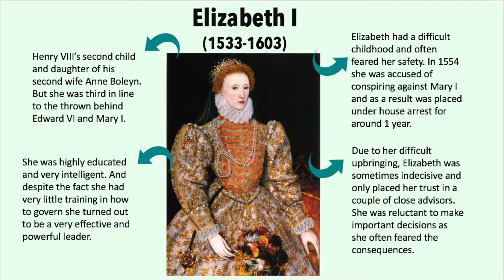But who was Elizabeth and what was she really like? Well, she was Henry VIII's second child and daughter of his second wife, Anne Boleyn. She was third in line to the throne, behind Edward VI and Mary I. Elizabeth had a difficult childhood and often feared for her safety. In 1554 she was accused of conspiring against Mary I and as a result she was placed under house arrest for around a year.